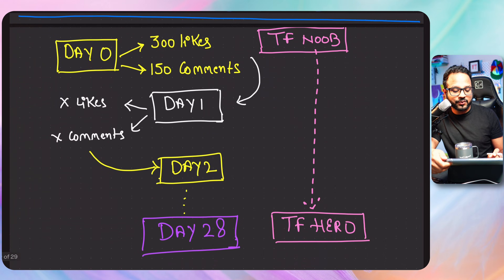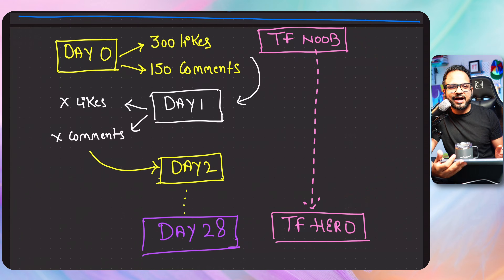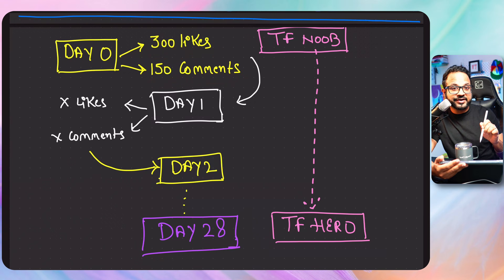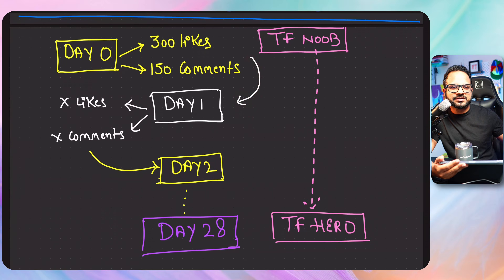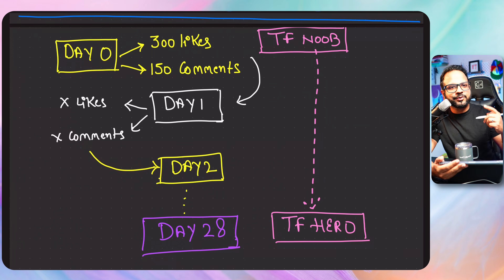So let me tell you how does it work — how do we go from a Terraform noob to a Terraform hero in 28 days? Every video will have a comments and like target associated with it. I'll give you a target at the beginning of the video. For example, this video will have a like target of 300 likes and 150 comments. As soon as this video gets 300 likes and 150 comments, I will unlock the day one video. I have uploaded every single video of this series, but I have marked it as private. So as soon as the target is complete, I will just make it public. Then once the day one video is published, it will also have some comments and like target — once you achieve that, I will unlock the next video. And I keep doing that until day 28 and until you become a Terraform hero.